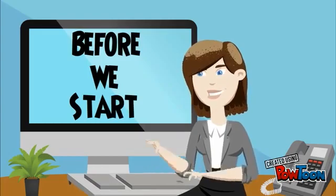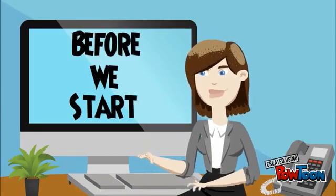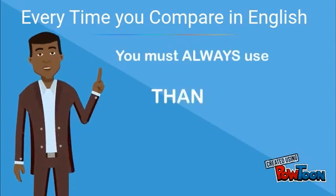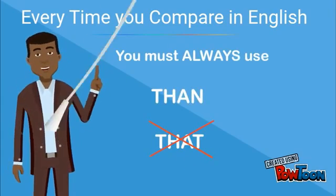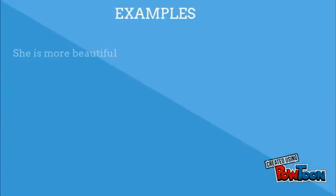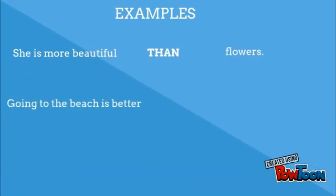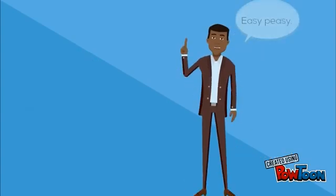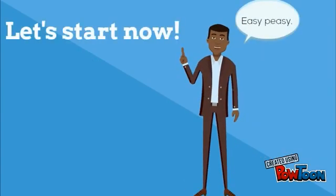Before we start, I need you to know something. Every time you compare in English, you must always use 'than' instead of 'that.' For example: 'She is more beautiful than flowers.' 'Going to the beach is better than going to the mountain.' 'I prefer soda than orange juice.' See? Easy peasy. Let's start now.